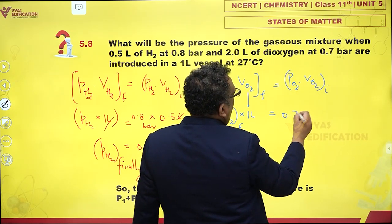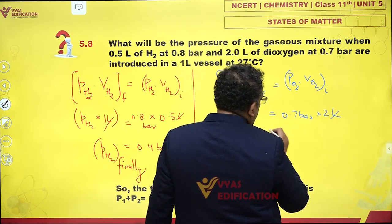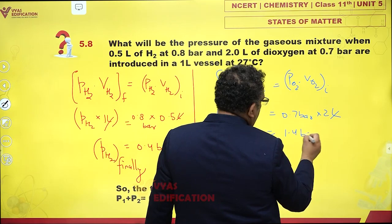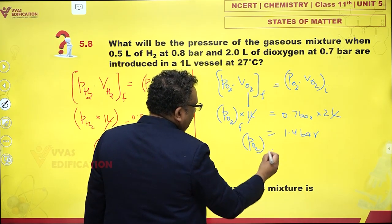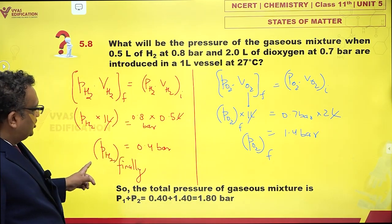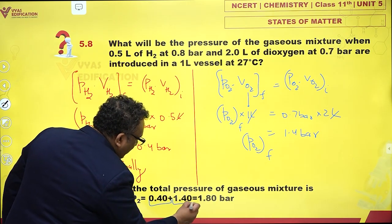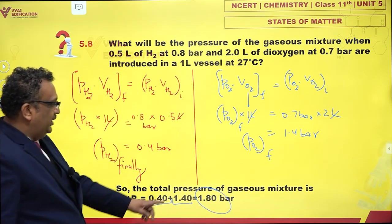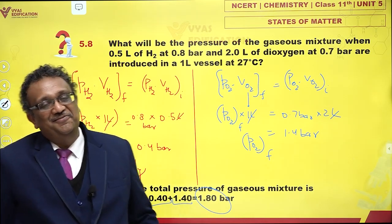Initially 0.7 bar and 2 liters, that means 1.4 bar partial pressure of O2 finally. The oxygen finally is 1.4 bar, hydrogen is 0.4 bar, so P total is 0.4 plus 1.4, which is 1.8 bar. That would be the final total pressure in the vessel.